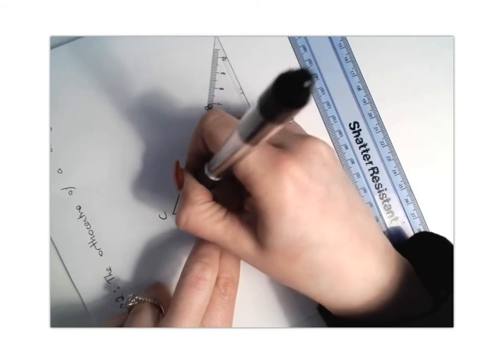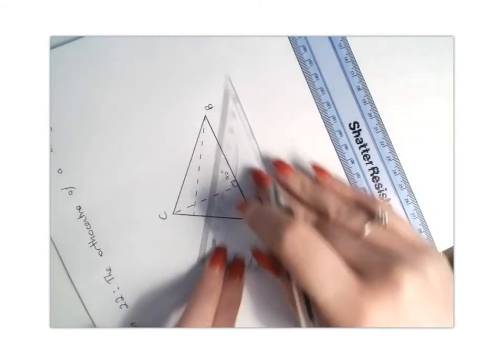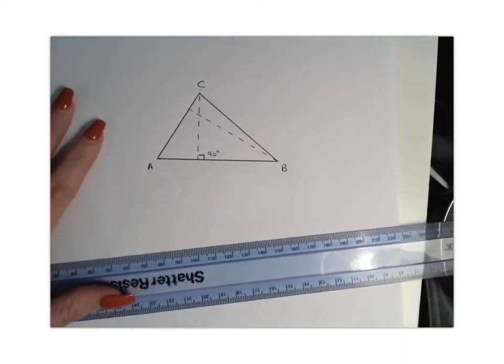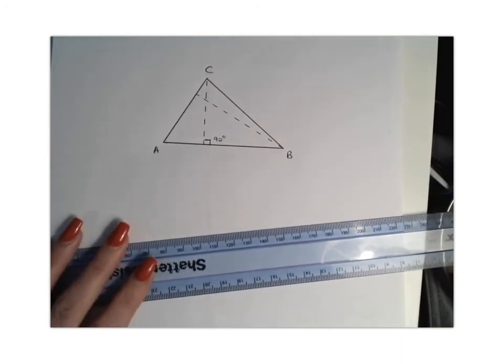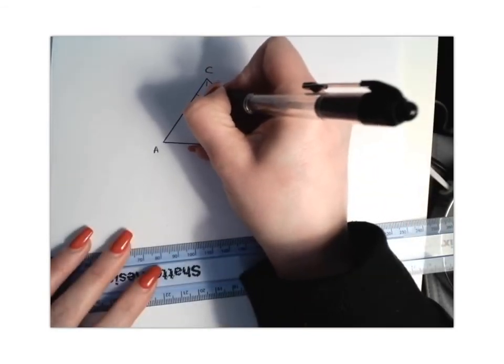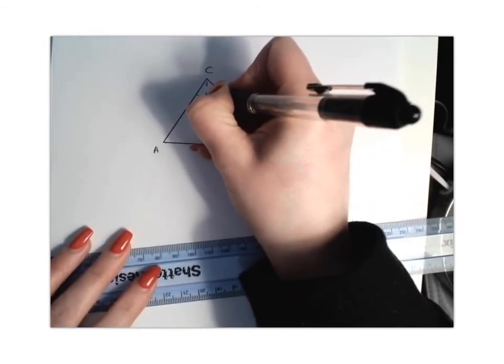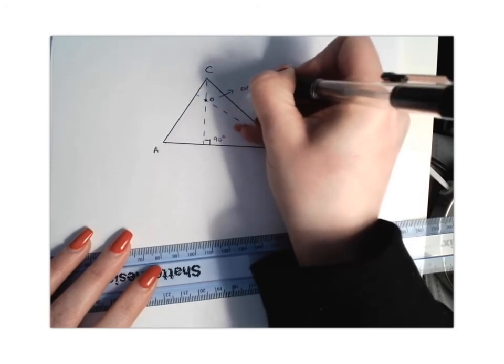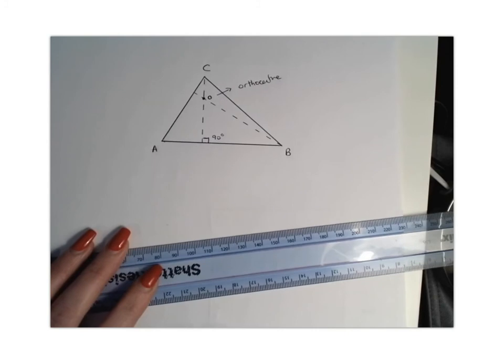Again, this is the altitude and where those two lines intersect each other. So that's the altitudes of your triangle. That's going to be the point which we can label O, which is the orthocentre of your triangle.